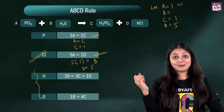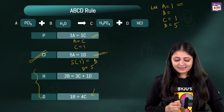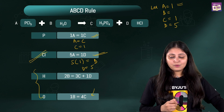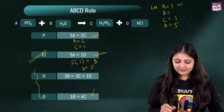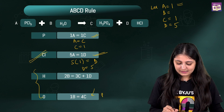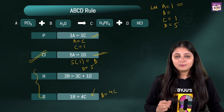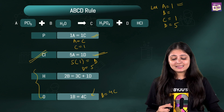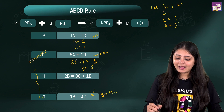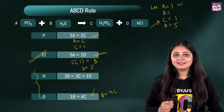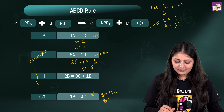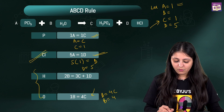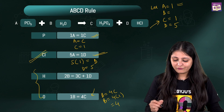Let's pick the simpler equation: 1B = 4C. This means B = 4C. Since C = 1, B = 4 × 1 = 4. So B = 4.